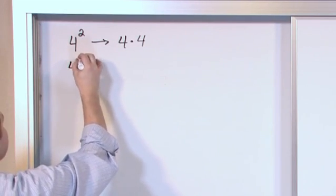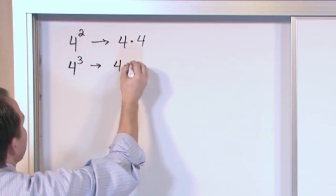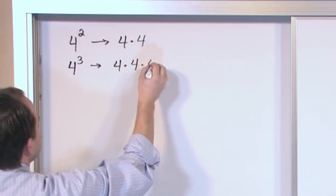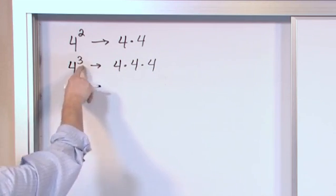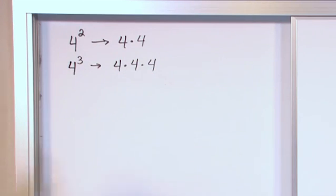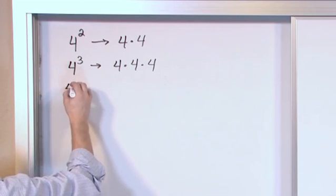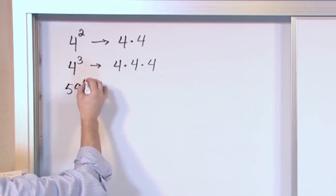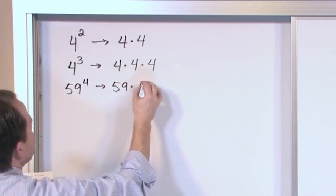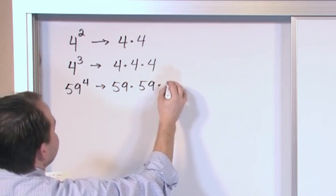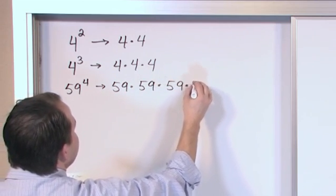4 raised to the power of 3 would be 4 times 4 times 4. You multiply by itself 3 times because that's the number indicated at the top. And it can be any number you want. It can be 59 raised to the fourth power.